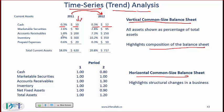On the other hand, if you look at accounts receivable, the number goes up in absolute terms from 200 to 250, but the vertical common-sized balance sheet shows you that in percentage terms the number is increasing from 5.8% to 7.3%, so that is potentially an issue that needs to be looked into.